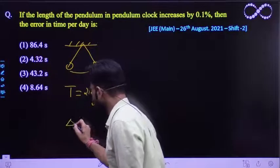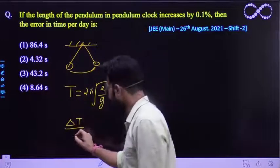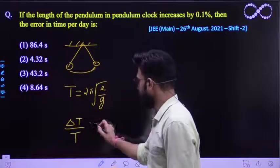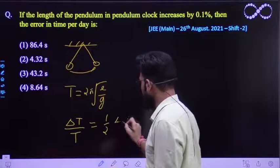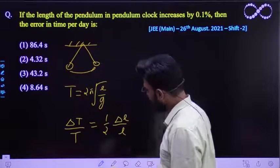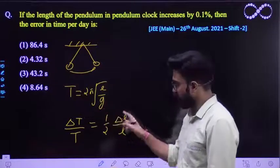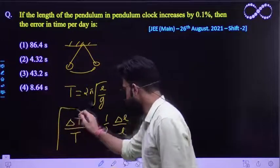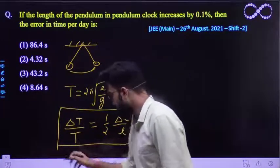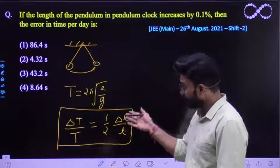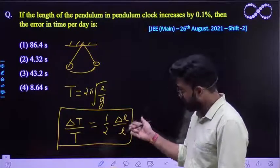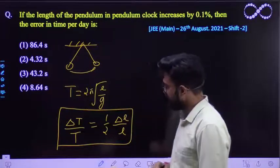So if we want to find this in terms of error, the error in the measurement of time must be equal to half times of del L by L. Because G is constant over here. So this is expression for error in time if there is some error or there is some increase in the length. So this is the expression that you are getting.